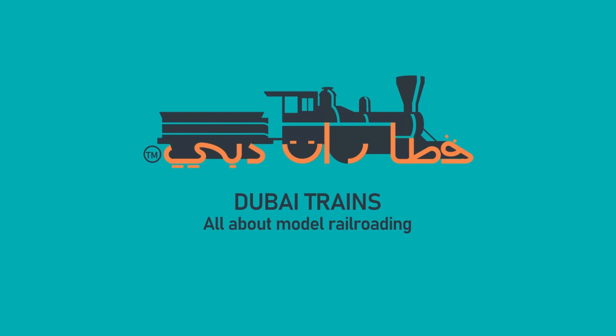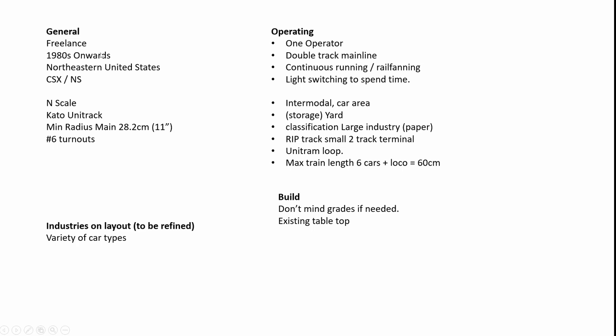Let's have a look at the general requirements for the layout. It's a freelance design set in 1980s onwards in the northeast side of the US. I'm running CSX and Norfolk Southern locomotives in N scale with Kato Unitrack. The initial idea was a minimum radius of 11 inch and turnout number six.